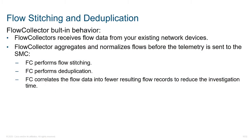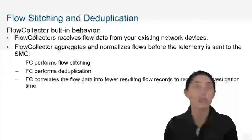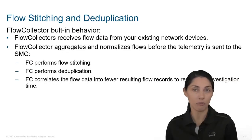When we generally look at NetFlow data, it has the default behavior to want to generate unidirectional records. This gives us two different flow records for a single session, but it does make it a little bit more difficult to look at the full picture. Flow stitching allows us to be able to see the full picture.